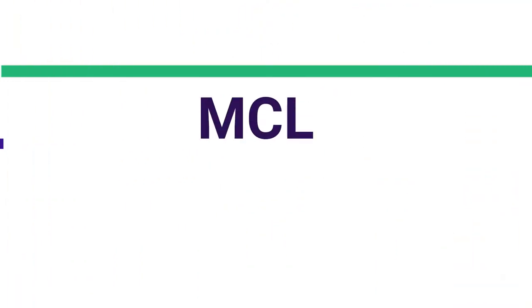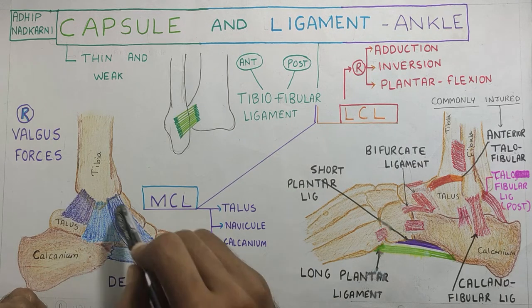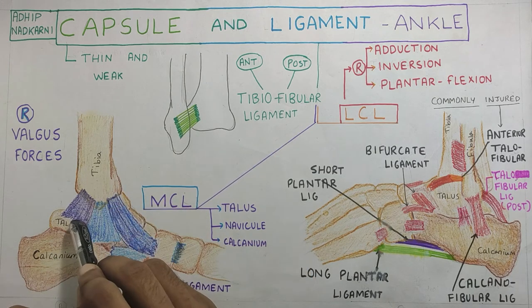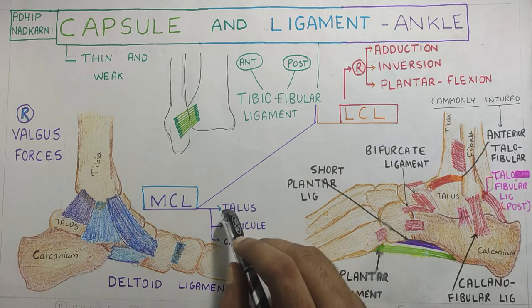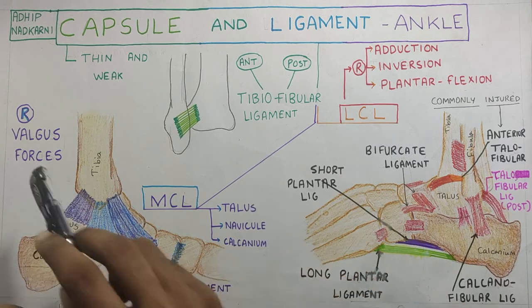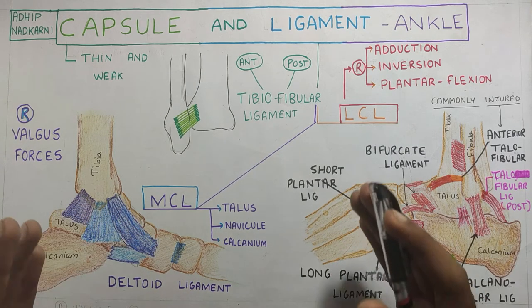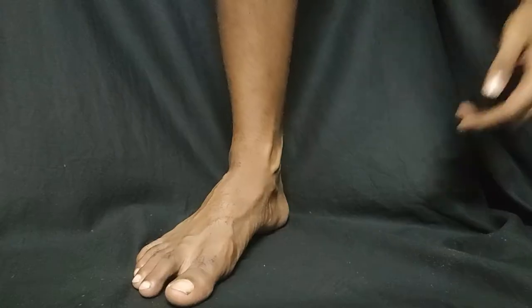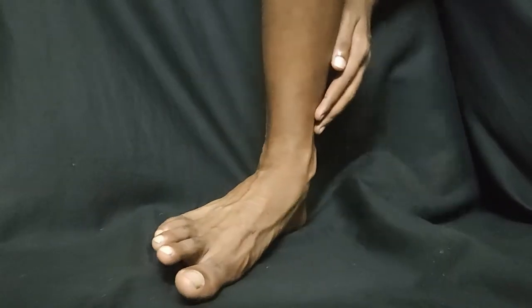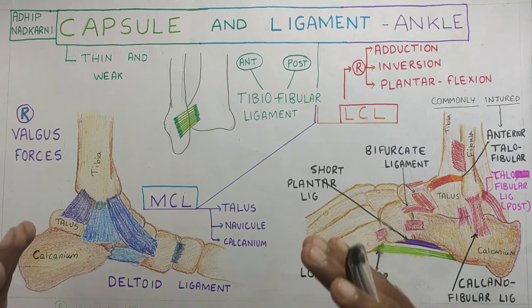Next is the MCL ligament, also known as the deltoid ligament because of its fan-shaped structure. The MCL ligament connects the tibia to the talus, calcaneum, and navicular. This ligament provides resistance against valgus forces in the ankle joint. If there is a force that comes on the ankle joint from the lateral side, or if there is eversion of your leg, this will be stabilized by the MCL or medial collateral ligament, also known as the deltoid ligament.